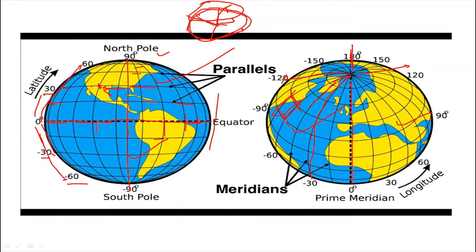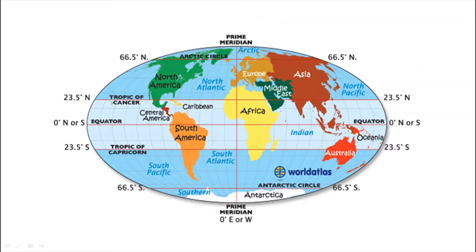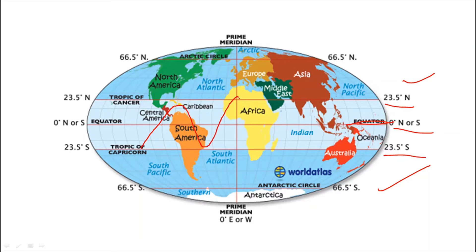With the help of this grid, we can locate any place on the globe. Now let's look at the important latitudes on Earth. The equator at 0 degrees divides the Earth into the northern and southern hemispheres. At 23.5 degrees north is the Tropic of Cancer, and at 23.5 degrees south is the Tropic of Capricorn. The sun is always overhead between these two tropics. At 66.5 degrees south is the Antarctic Circle, and at 66.5 degrees north is the Arctic Circle.